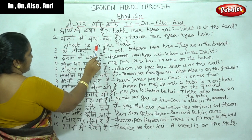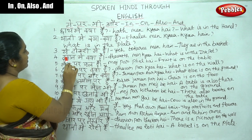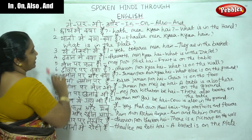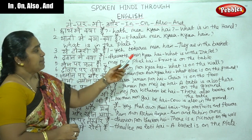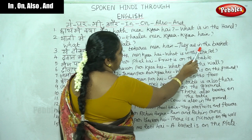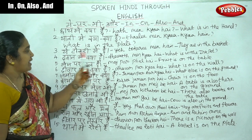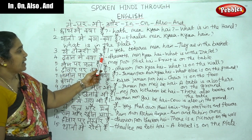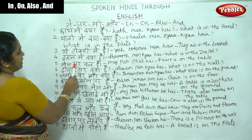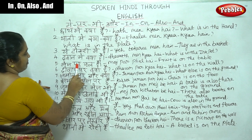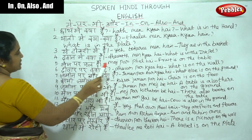Thali may kya kya hai — what is in the plate? Ye tokari may hai — they are in the basket. Tokari means basket. Thali may kya hai — what is in the ink pot? Mej par phal hai — fruit is on the table.